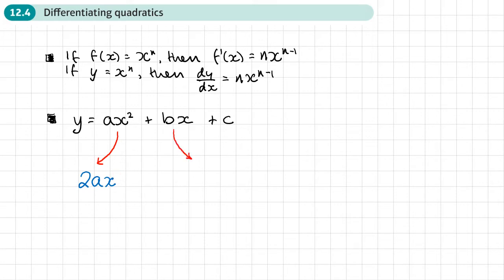If we look at this term here, now there's no power here, but that would be the same as power one. And now if we apply the rule, then what we do is we multiply the b by one. So it's going to be b. And then if you take one away from the power, you effectively get x to the power zero, which is nothing.